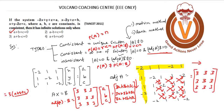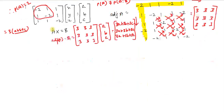Since det(A) = 0, the rank of A is less than 3 — it may be 1 or 2. Checking the 2×2 sub-matrices, rank of A equals 2. We now form the augmented matrix [A|B]: [−2, 1, 1 | a; 1, −2, 1 | b; 1, 1, −2 | c].